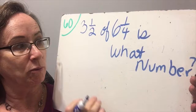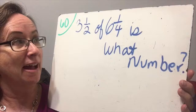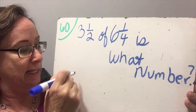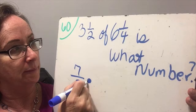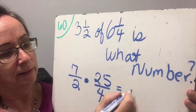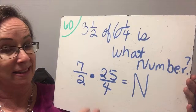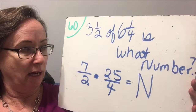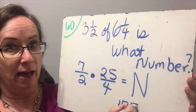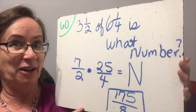Practice problem one: three and a half of six and one quarter is what number? Pause and copy it down. Three and a half: three times two is six, plus one is seven halves. Six and one quarter: six times four is twenty four, plus one is twenty five fourths. Nothing cancels — seven, twenty five, two, four all have no common factors. Seven times twenty five is one hundred seventy five, over two times four which is eight. Answer: 175 over 8.